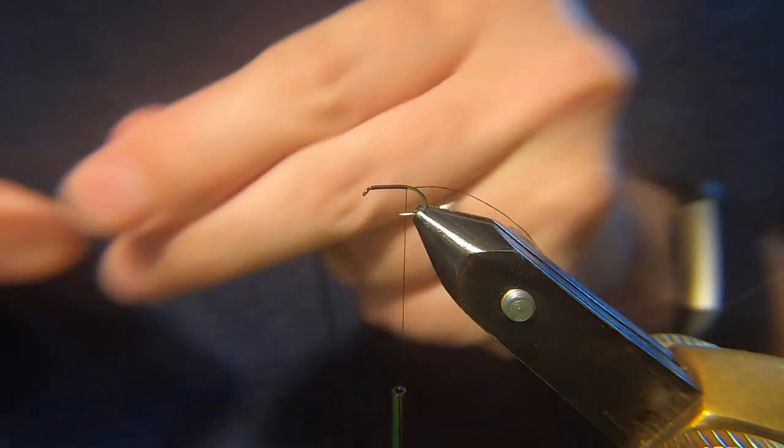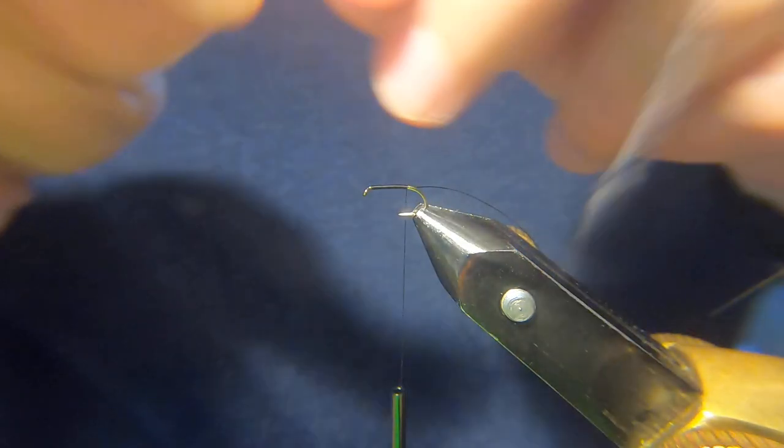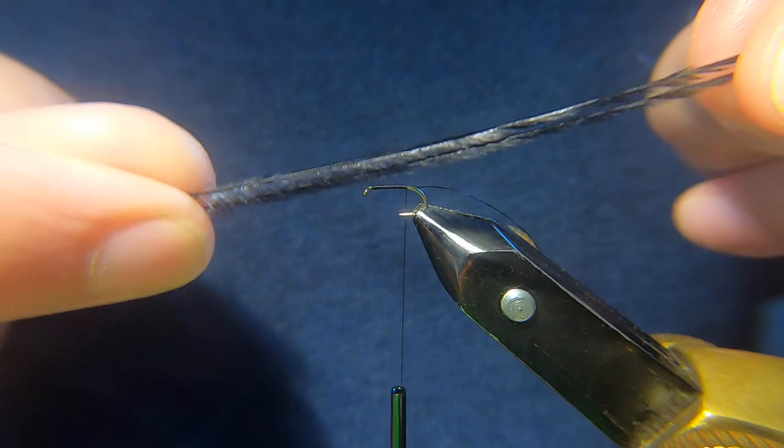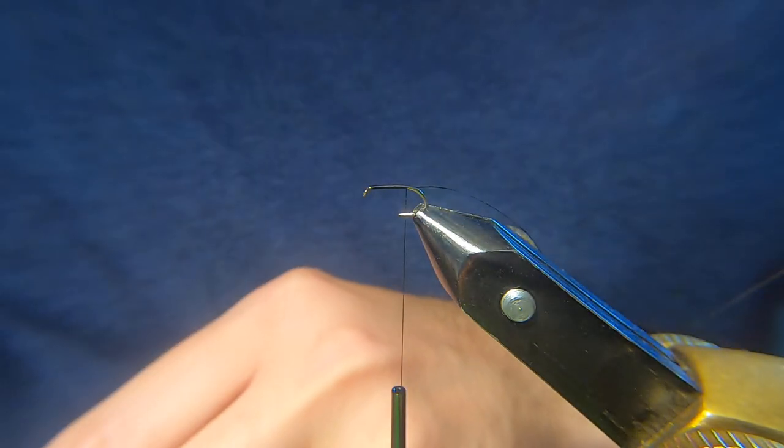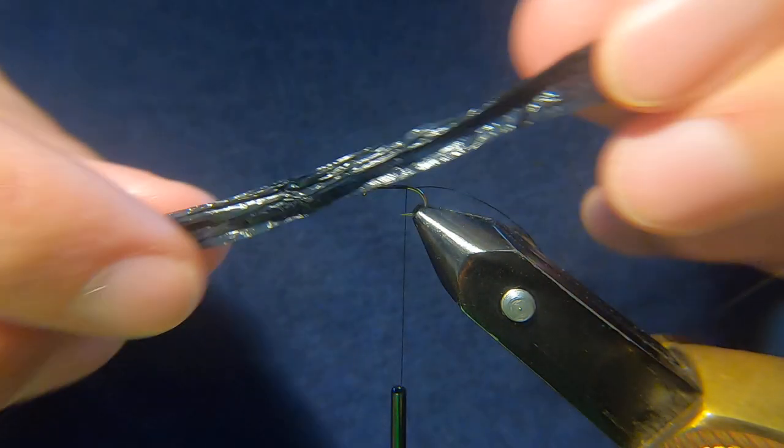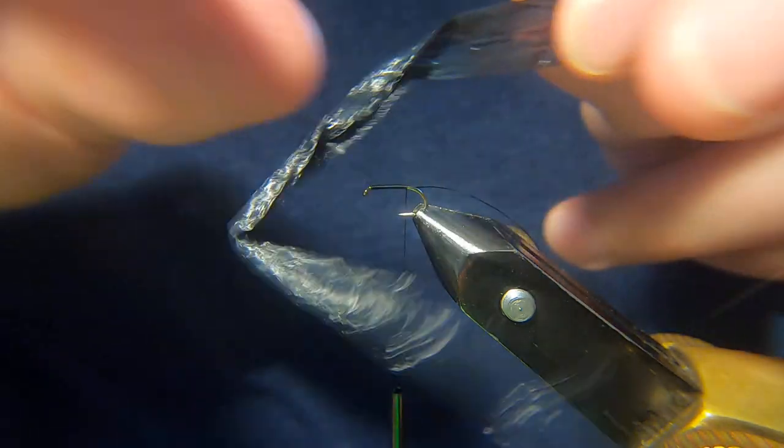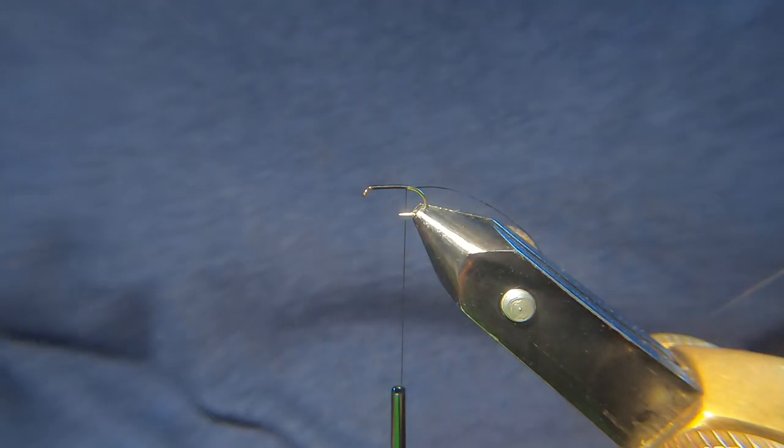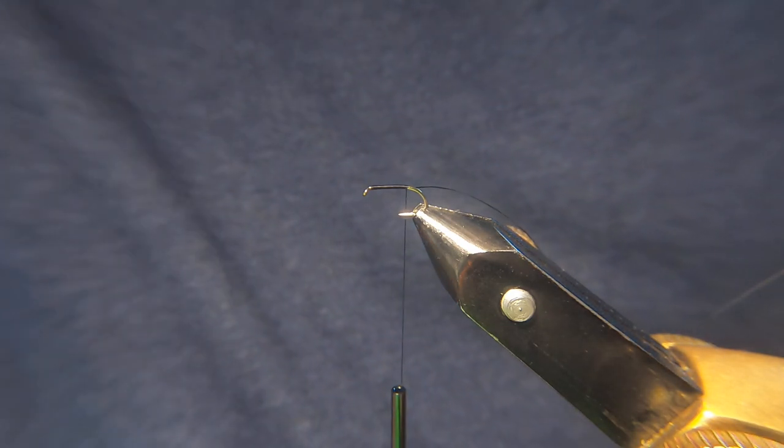First material is some ostrich herl, dyed black. And then we've got some raffia, black raffia. This is a synthetic one, it's basically just plastic. When I tied the fly originally, it was the natural raffia, which is basically just a grass.